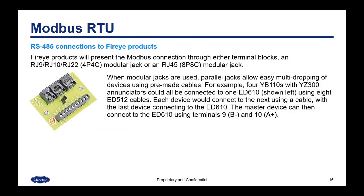FireEye products will present the Modbus connection through either terminal blocks, an RJ-9/10/22 (four-position modular jack), or an RJ-45 eight-position modular jack. When modular jacks are used, parallel jacks allow easy multi-dropping of devices using pre-made cables. Parallel jacks means two jacks beside each other on the device. For example, four YB-110s with YZ300 enunciators could all be connected to one ED610, which is the converter device shown on the left that has terminal blocks, using eight ED512 connect cables. Each device would connect to the next using a cable, and the last device would connect to the ED610. The master device can then connect to the ED610 using terminals 9 (B) and 10 (A).